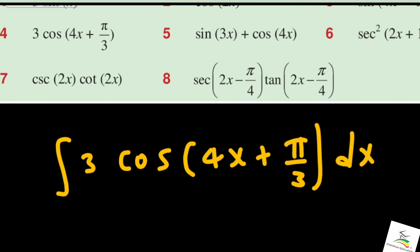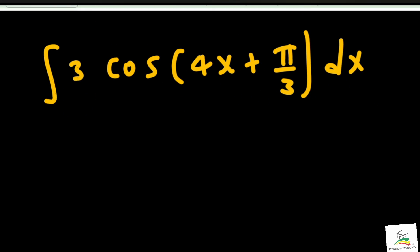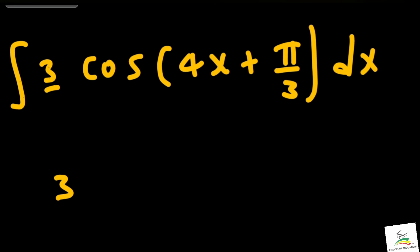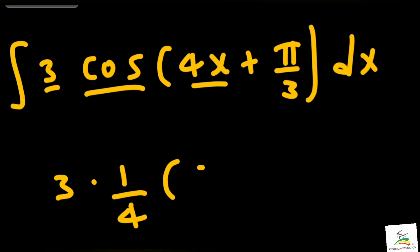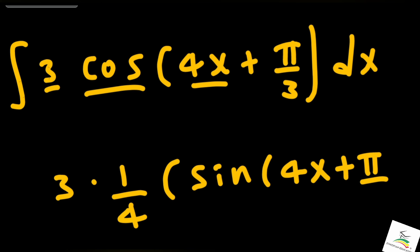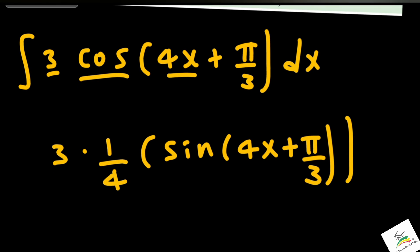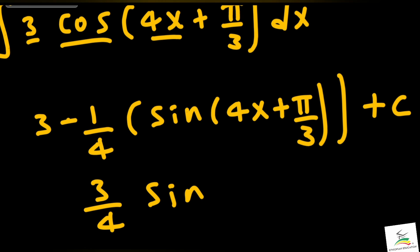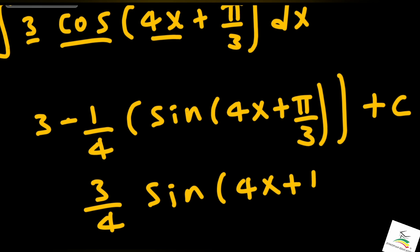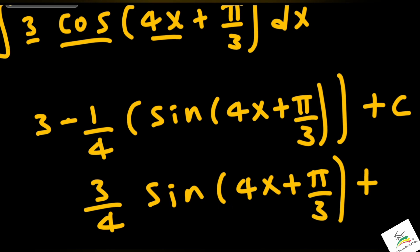Now: integration of 3 cos(4x + 5/3) by dx. The constant is 3, and the x coefficient is 4, so 1 over 4 — cos integrates to sin — giving 3 times (1/4) sin(4x + 5/3). That simplifies to (3/4) sin(4x + 5/3) plus C.